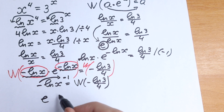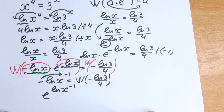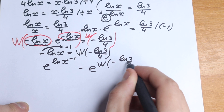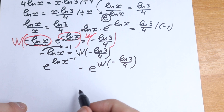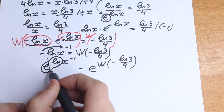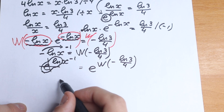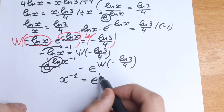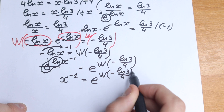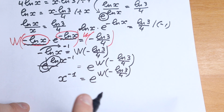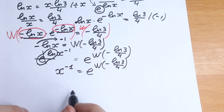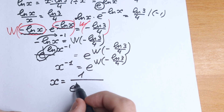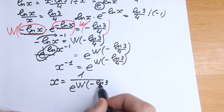Taking e to the power of both sides: e to the power natural log x to the power minus 1 on the left, equal to e to the power Lambert W of minus natural log 3 over 4 on the right. The e and natural log cancel on the left, giving x to the power minus 1. So x to the minus 1 equals e to the power Lambert W of minus natural log 3 over 4. Swapping numerator and denominator, x equals 1 over e to the power Lambert W of minus natural log 3 over 4.